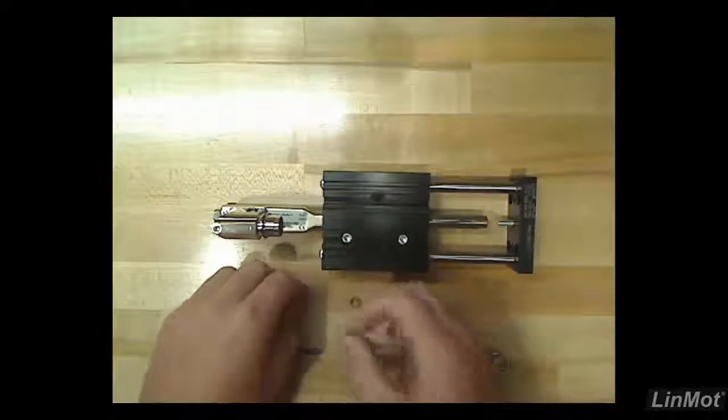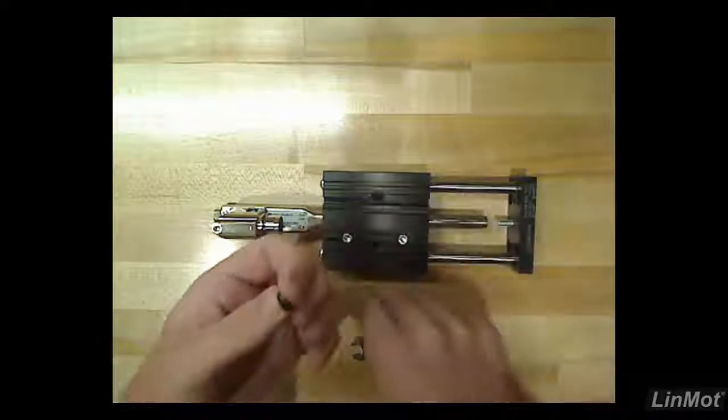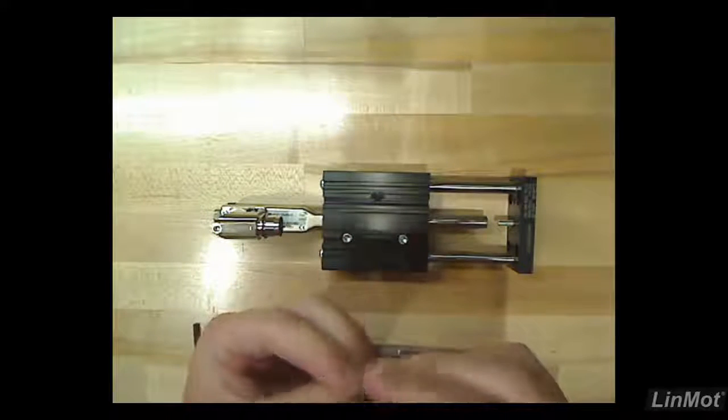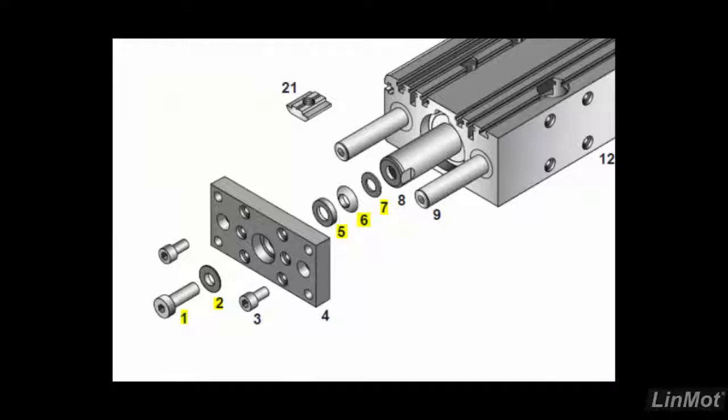Next, assemble the ball washer, socket washer, and the dished washer. These are items 5, 6, and 7 in the following picture.